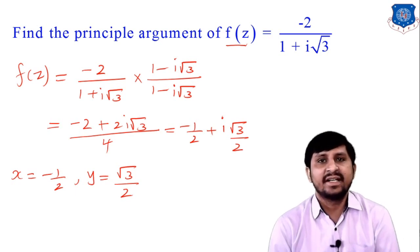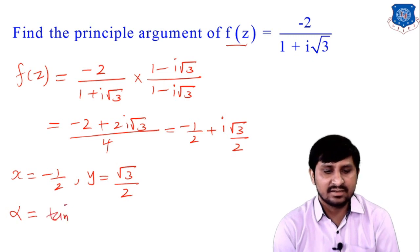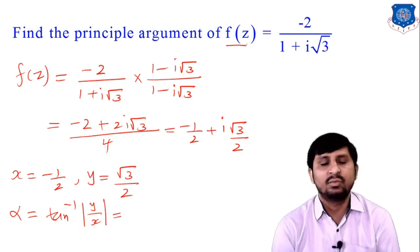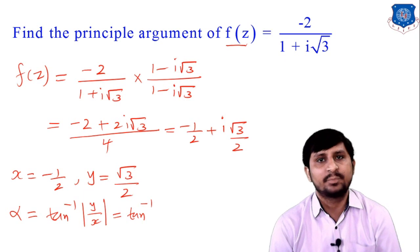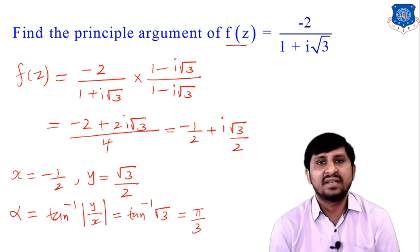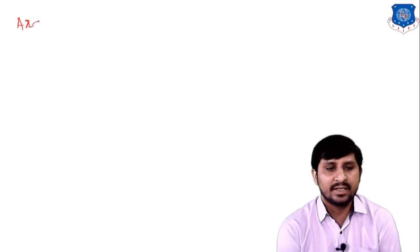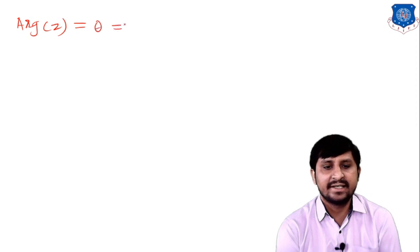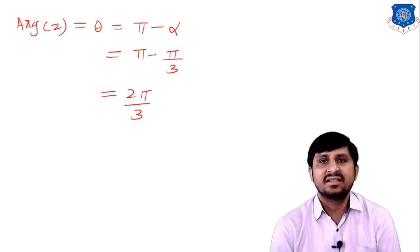Find alpha: α = tan⁻¹(|y/x|) = tan⁻¹(√3) = π/3. Therefore the principal argument θ = π − α = π − π/3 = 2π/3. This is an important example often asked in examinations.